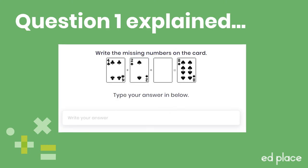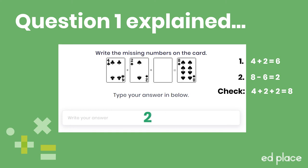Now let's look together at some of the questions you have completed. Firstly, question 1 — we need to find the missing number on the card. There are two steps needed to crack this. We've been given the numbers 4 and 2, so let's add those together to give us 6. Now we can use this to complete the inverse operation, a subtraction sentence: 8 take away 6 equals 2, so our missing number is 2. Let's pop that back into the original question and check: 4 add 2 add 2 add 2 equals 8. Yes, the missing number is 2.